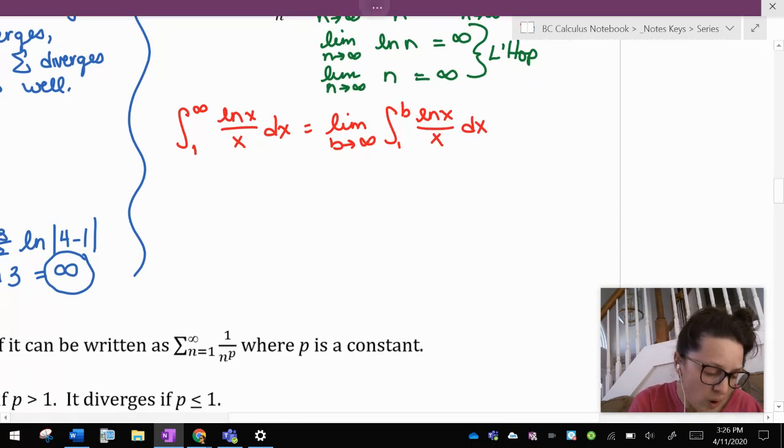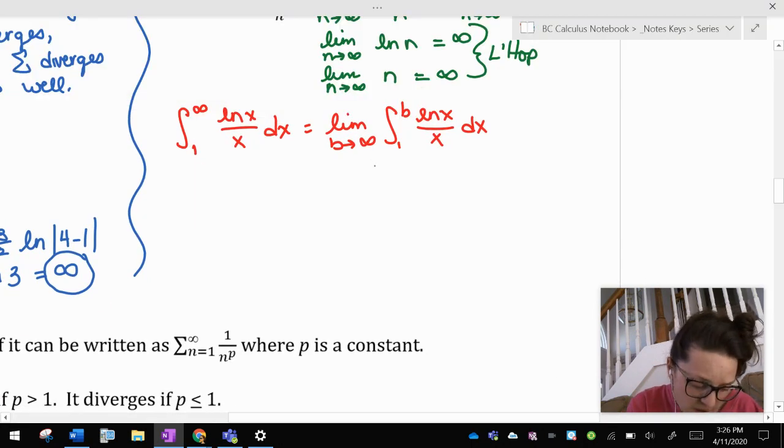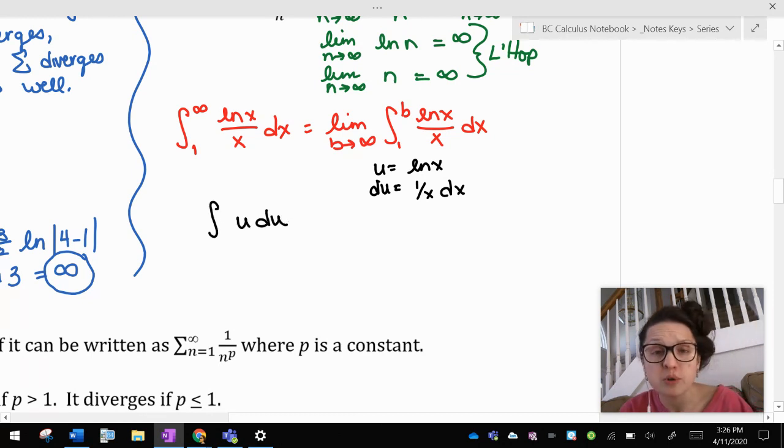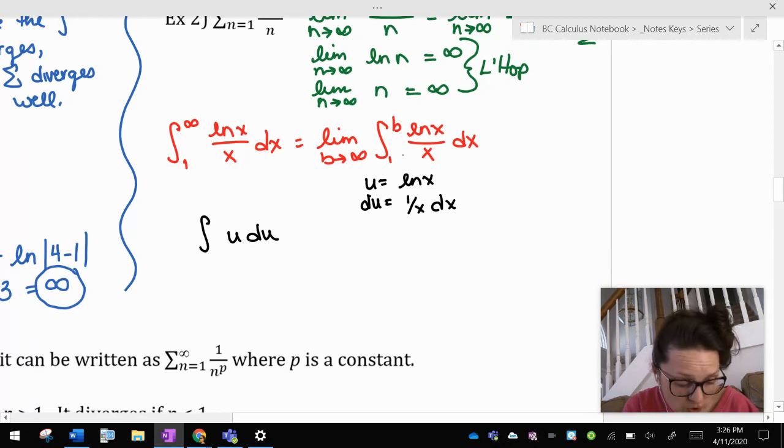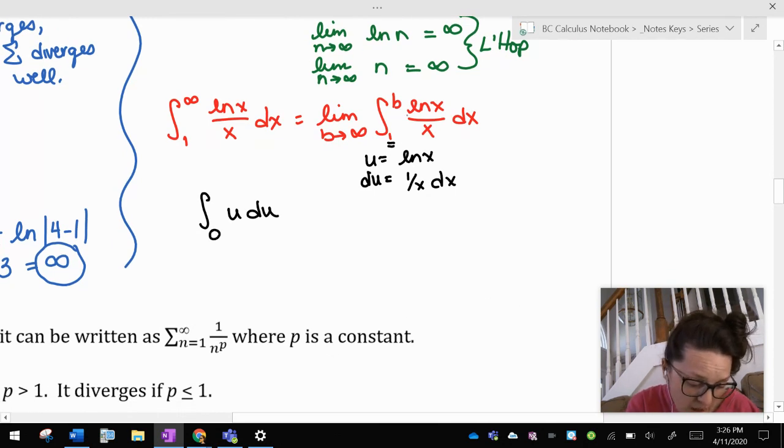I'm going to use a u sub here. So I am going to say, let's let u equal ln x, and then du would be 1 over x. And yeah, that's what I've got. So I have the integral of u du. Now, if I'm doing a u integral, I need u bounds. So when I plug 1 into ln x, I get 0. If I plug b into ln x, I get ln b, and that's totally okay. The limit is still allowing b to approach infinity. The antiderivative of u du is 1 half u squared.